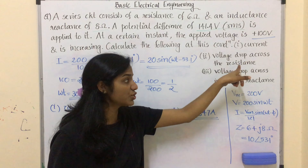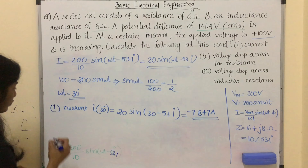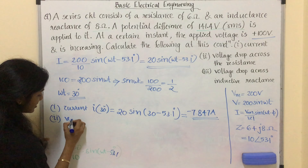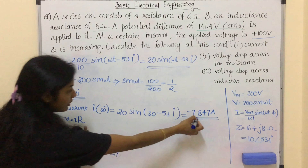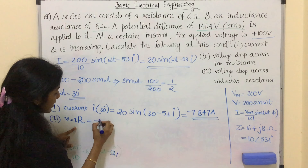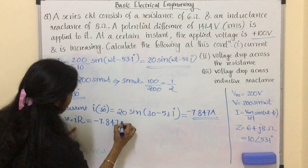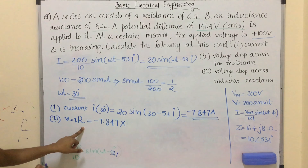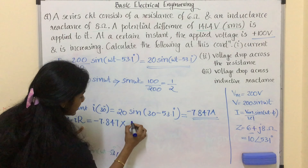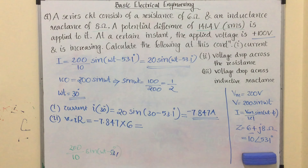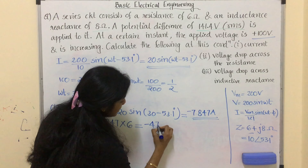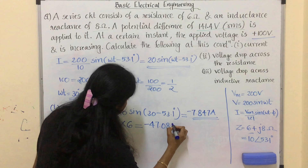Next, we find the voltage drop across the resistance. V_R = i × R = -7.847 × 6 = -47.08 volt.